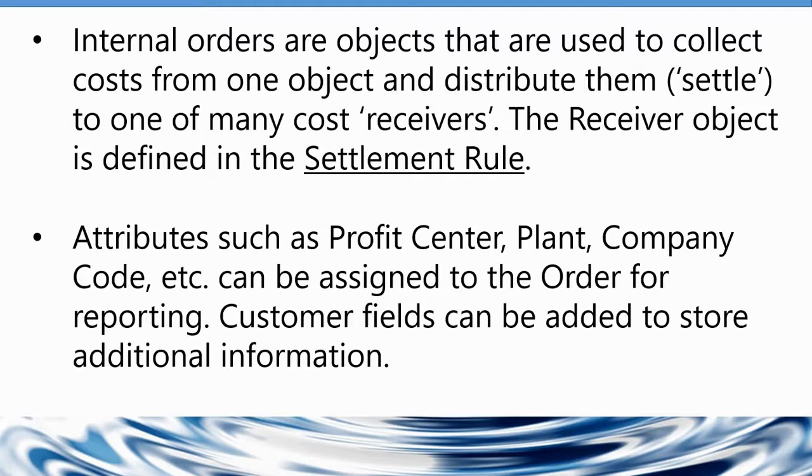And the receiving object is just what it looks like here. It's called a receiver. And the receiving object is something that is defined in the settlement rule, meaning you can define a receiver object as being a GL account, a material, another order. There's a variety of different object types that you can use in your settlement rule. So that is one of the reasons why internal orders can be so flexible.